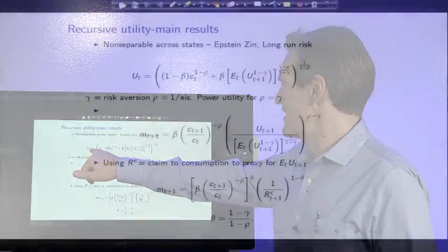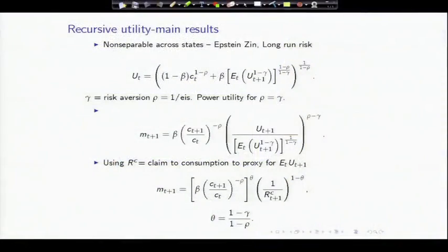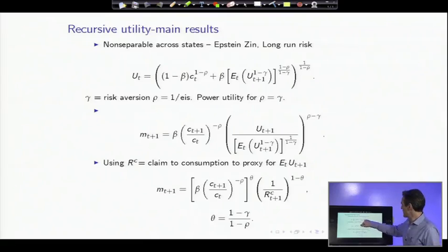The utility function is written this way. There's today's consumption and then tomorrow's utility that goes through this non-linear aggregator. If this were a linear function here, then just today's consumption and tomorrow's utility, you could iterate that forwards and get back to power utility. So power utility is a special case when that aggregator is linear. Instead, we have a CES aggregator between today's consumption and tomorrow's utility, and that non-linearity in this second term is what drives the interesting features of this utility function.